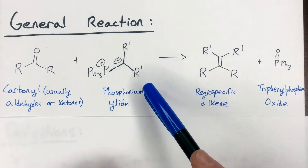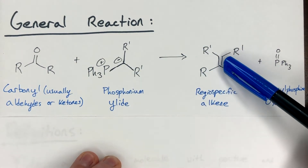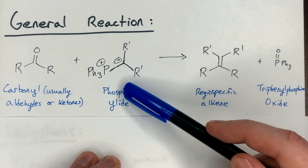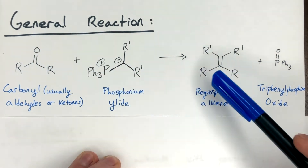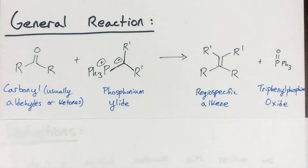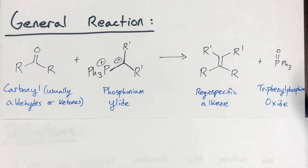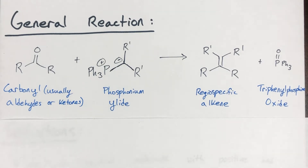You have R-prime groups on the carbon connecting them, and the ylid group essentially replaces the oxygen in making your regiospecific alkene — you can think of that as a shorthand for these reactions. As a byproduct, you will make triphenylphosphine oxide, which is a phosphorus carbonyl-like species with a double bond between phosphorus and oxygen and three phenyl groups. We'll talk about why triphenyl is chosen over other phosphines later in the video.